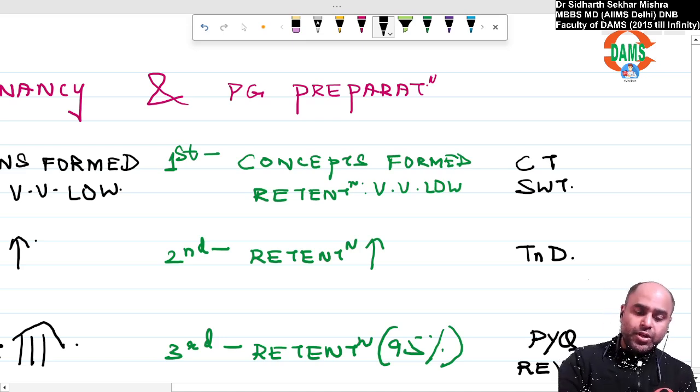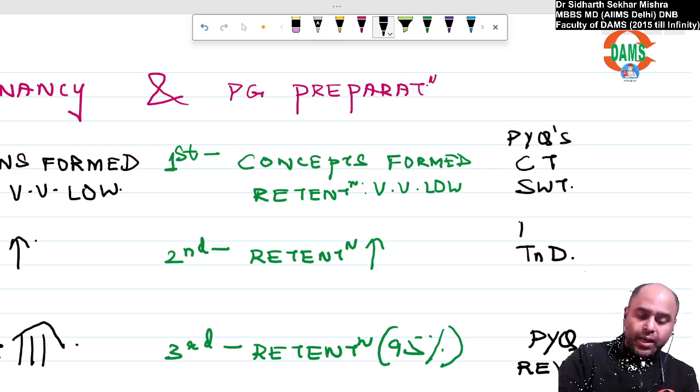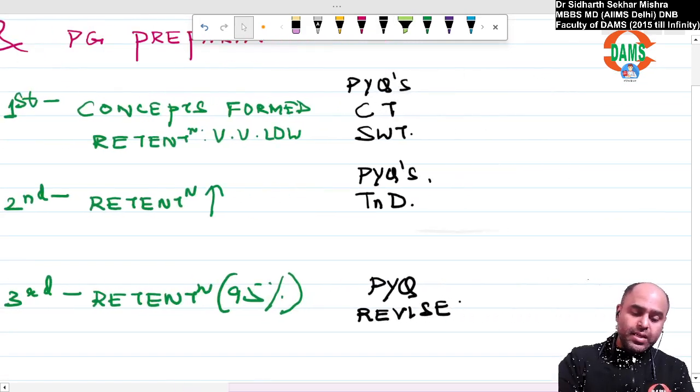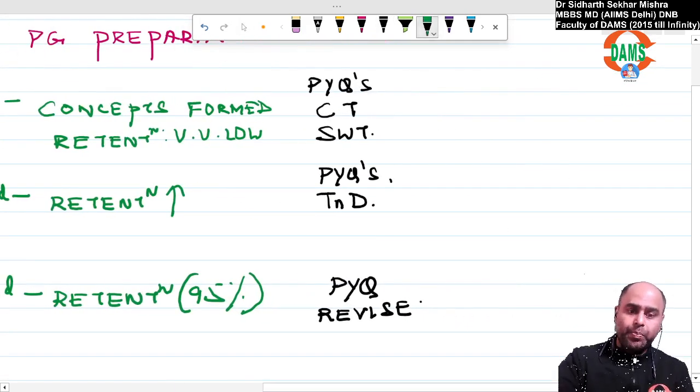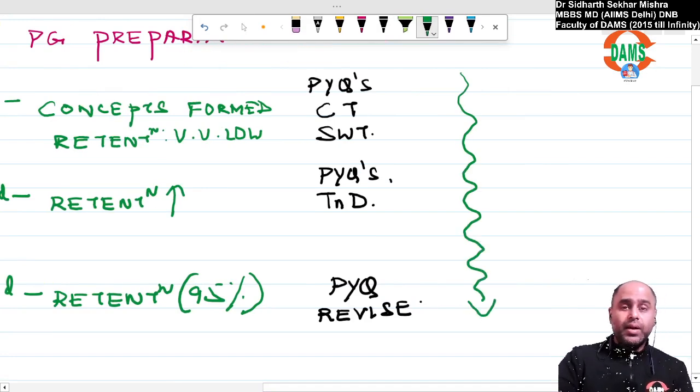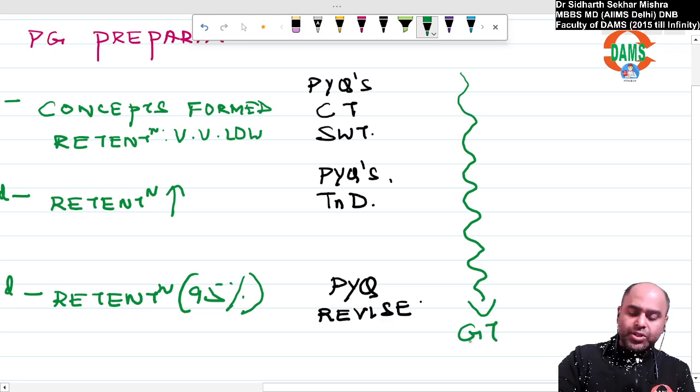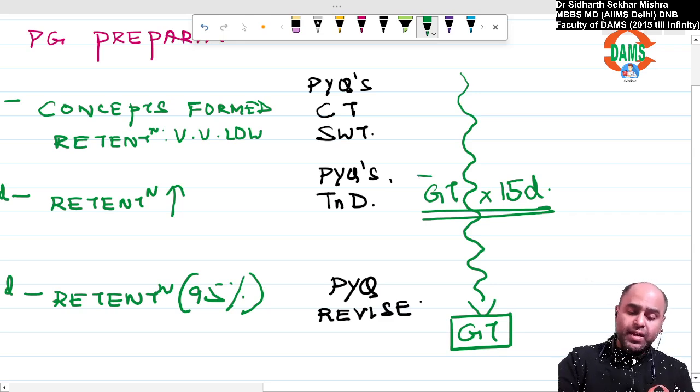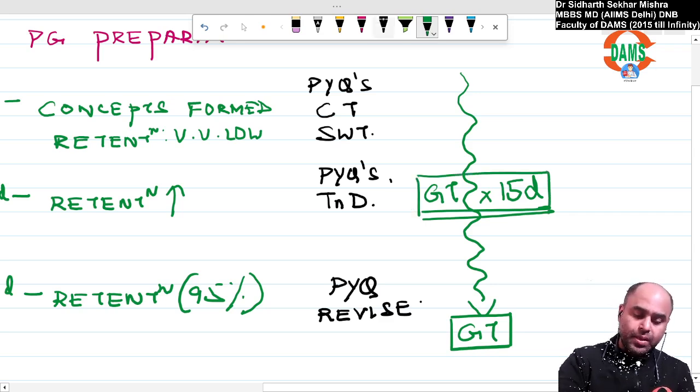Now if I am saying PYQs revise, the PYQ should be done in every revision to give you an idea that these are the important topics which we are going to target. Across the entire revision program you are supposed to go for grant tests. Grant tests should be given every 15 days. It is very important.